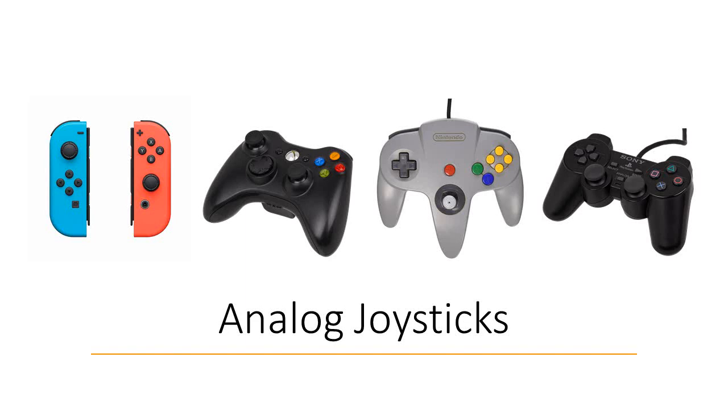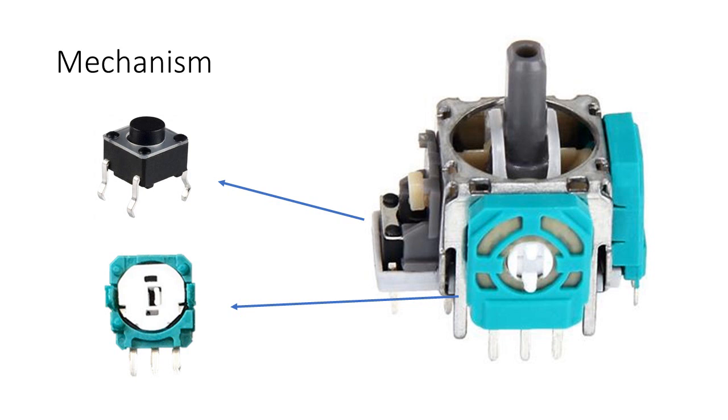How do analog joysticks work and what causes them to drift? All analog joysticks often have the exact same mechanism. One simple tactile knob for when you press down on a joystick and two potentiometers that determine the X and Y position of the joystick.